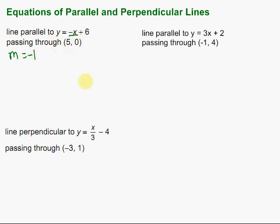Then we can use the given point and point-slope form to get our equation. Point-slope form: y minus y-sub-1, well here's our y-sub-1 which is 0, equals the slope negative 1, times x minus 5. We can also find the slope-intercept form by distributing that negative 1 through. On this side we're just left with y, because subtracting 0 doesn't change it. Negative 1 times x is negative x, and negative 1 times negative 5 is plus 5. Notice these equations look awfully similar because the slope is the same — they'll be parallel.